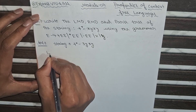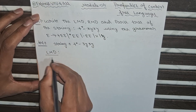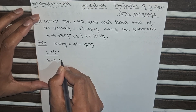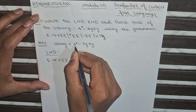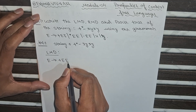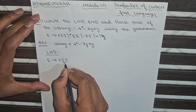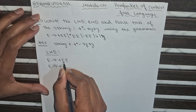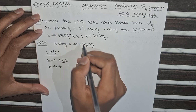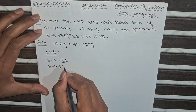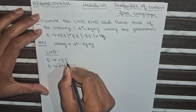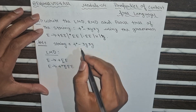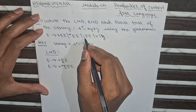Firstly I will write the LMD — leftmost derivation. The first step: starting symbol is E, which implies +EE because the first symbol is plus, so I am taking the +EE production. In LMD we put the variable from the left side. So E implies plus, and I will put this E as *EE because the next symbol is star. So *EE, and this E is already there. Now the next variable from the left side: I want minus symbol, so the production having minus is -EE.